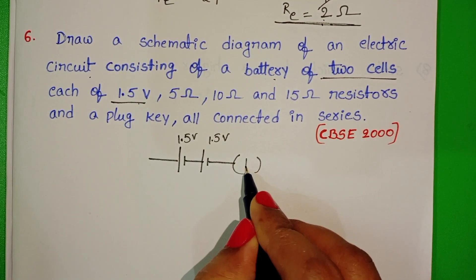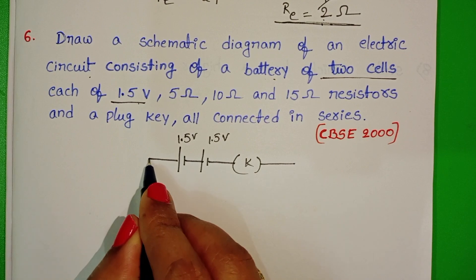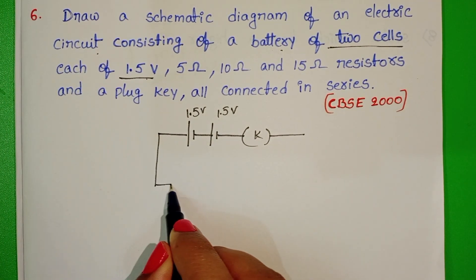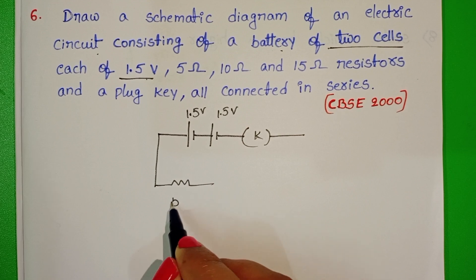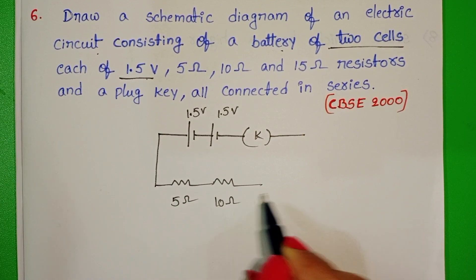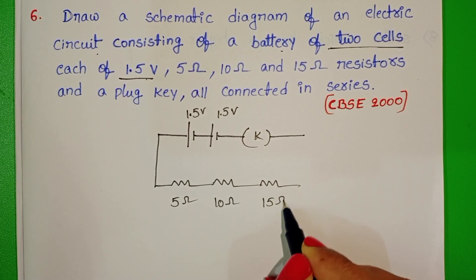And a plug key and three resistors. Resistance of the first resistor is 5 ohm, second resistor 10 ohm, and third resistor 15 ohm.